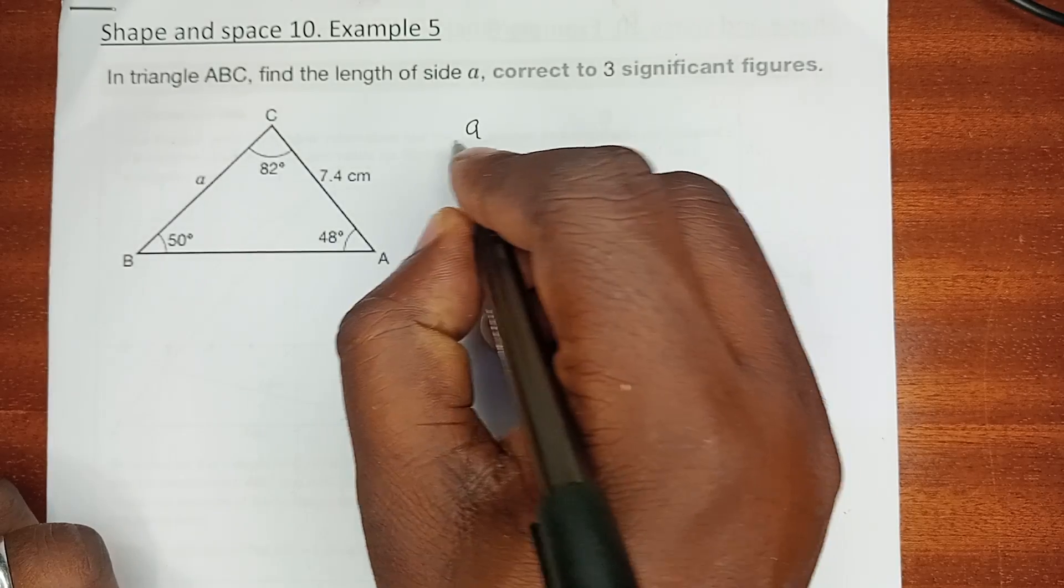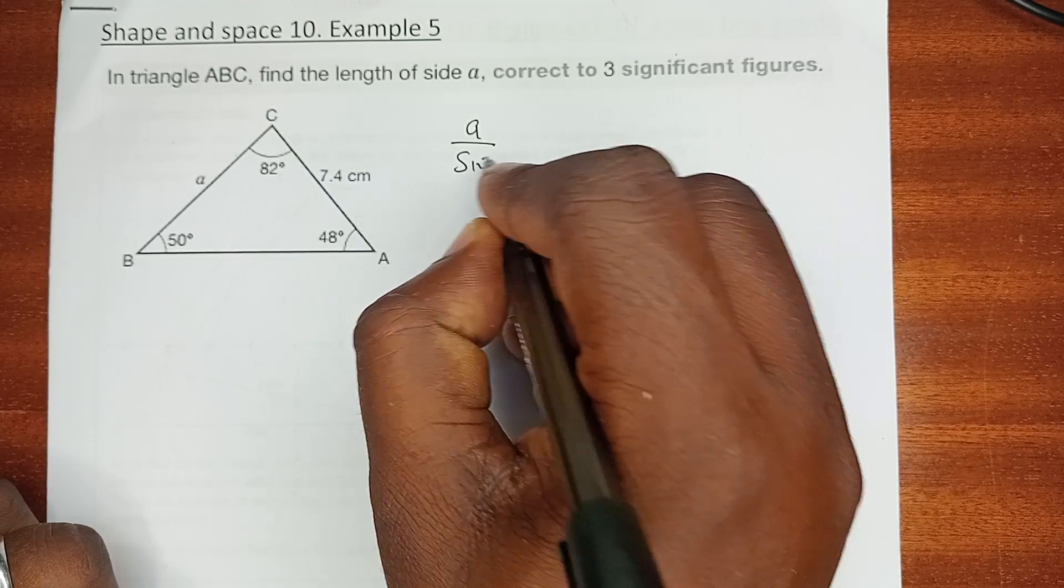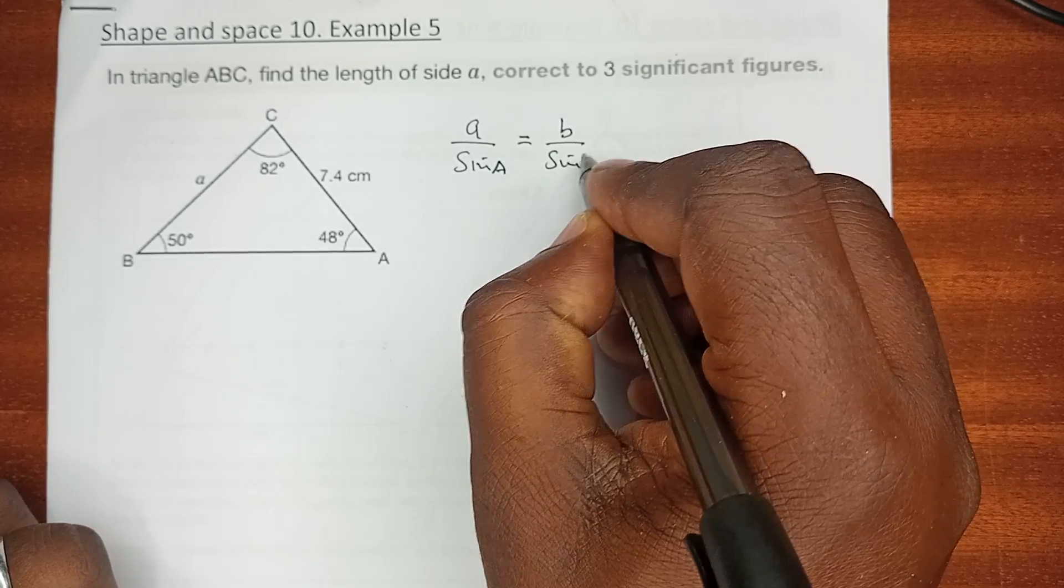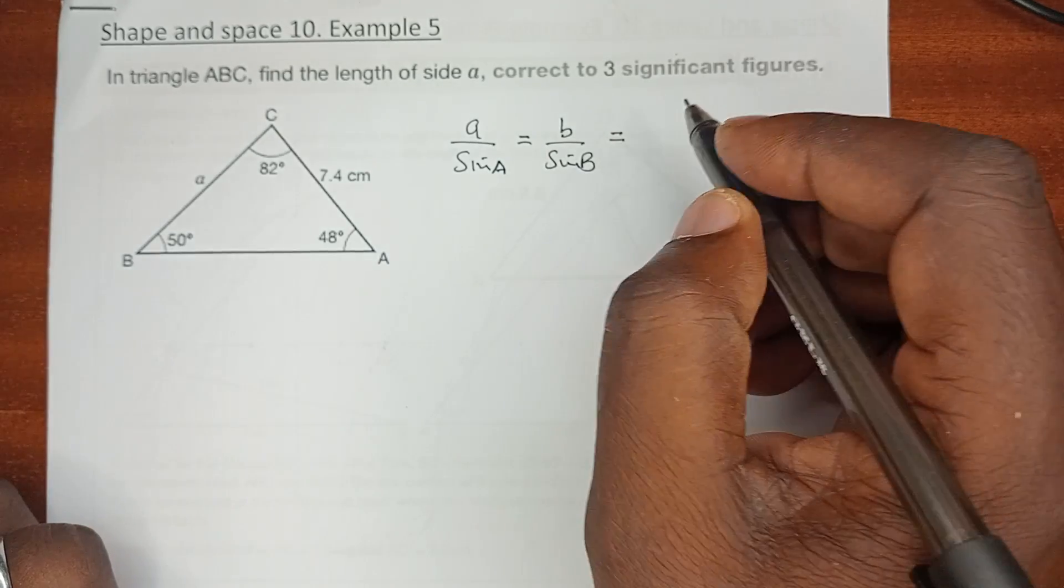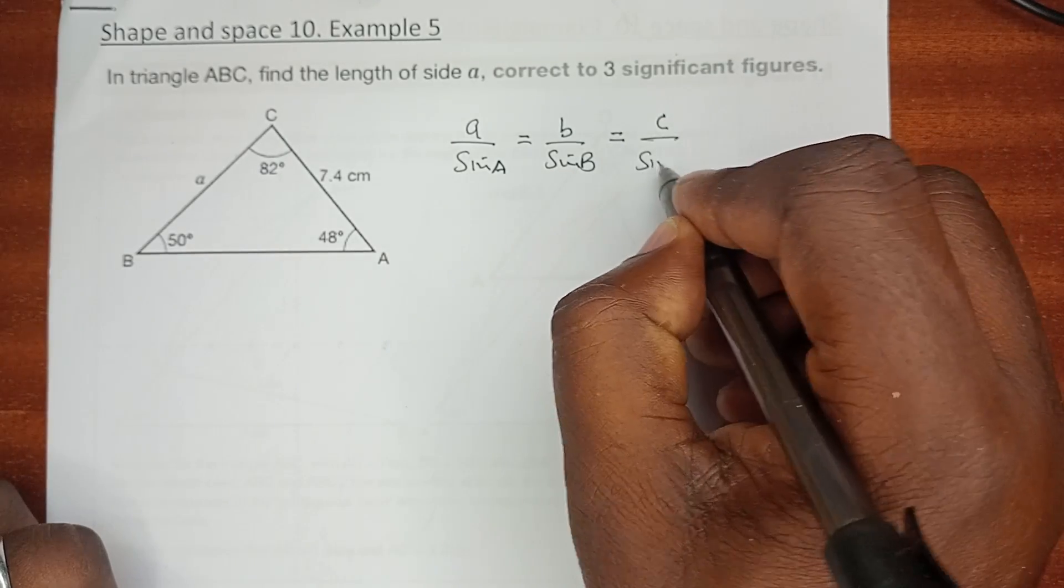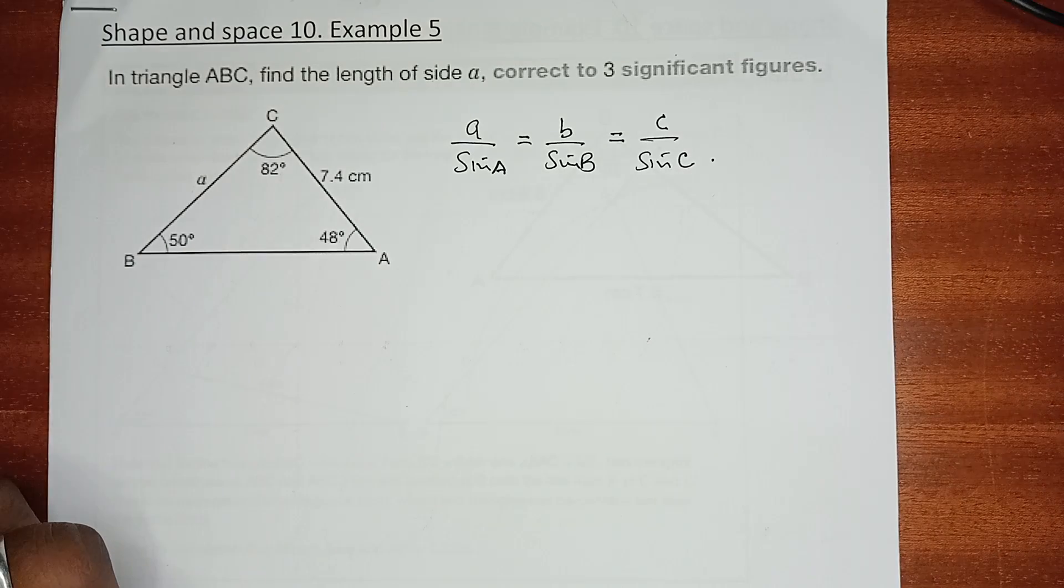And we have known that a over the sine of angle A is equal to side b over the sine of angle B, which is also equal to side c over the sine of angle C. And as such, in this question we are expected now to find out the value of a.